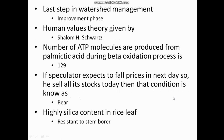Human value theory was given by Shalom Swartz. Number of ATP molecules produced from palmitic acid during beta oxidation process - 129 ATPs are formed. If a speculator expects prices to fall the next day and sells all his stocks today, that condition is known as bear. This is a stock market question, so you should also read economics thoroughly.